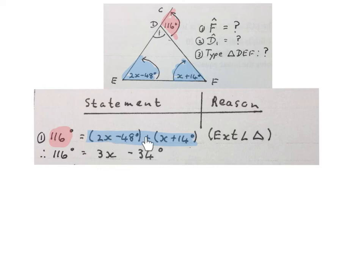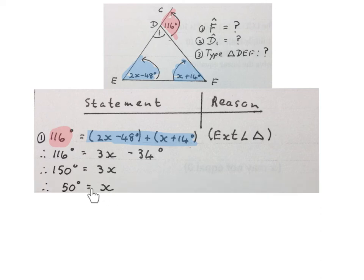We can keep the 116 degrees. 2X plus X is 3X, minus 48 plus 14 is minus 34 degrees. Plus 34 degrees on both sides, so 3X is 150 degrees. Now we divide by 3 on both sides. So X equals to 50 degrees.